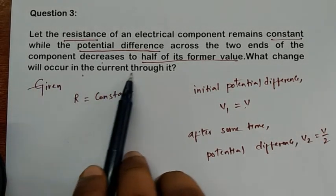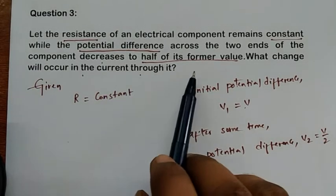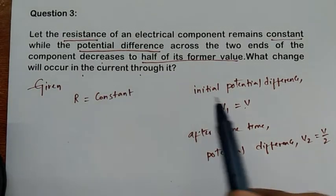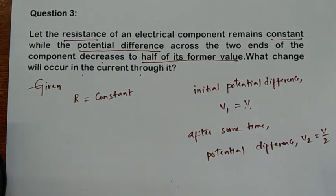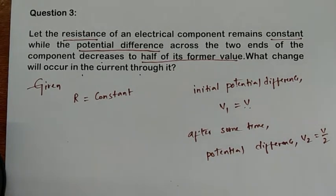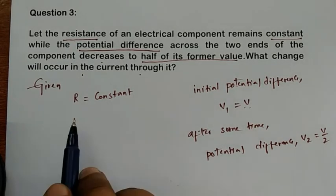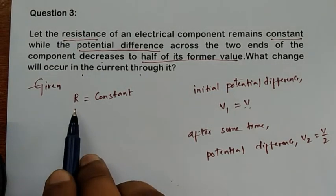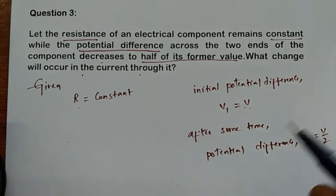What they are asking is: what change will occur in the current? Initially when voltage is V, how much current is flowing? And when it is V/2, how much current will be flowing? That is the change in current they are asking about. Think about any formula that connects resistance, voltage, and current.